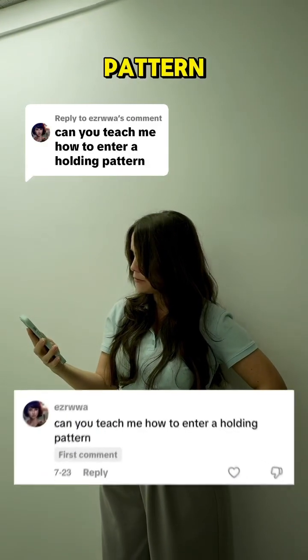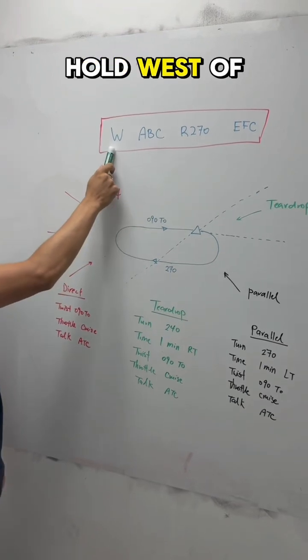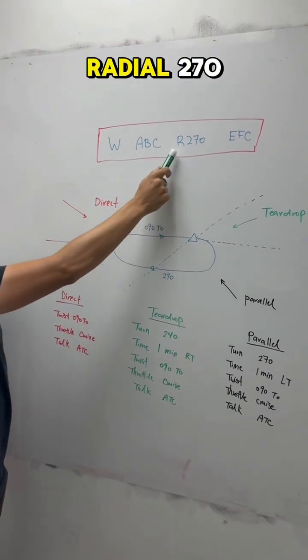Can you teach me how to enter a holding pattern? Gotcha! This is the holding instruction that we received. Hold west of fix ABC on radial 270.